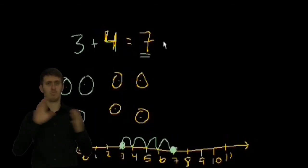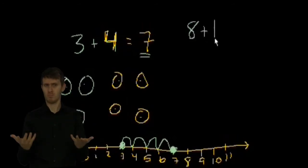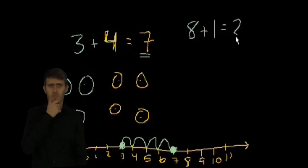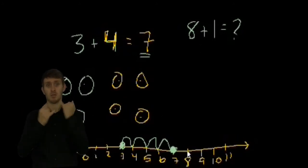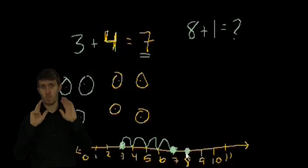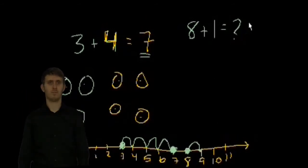We could do a couple of different ones. We could say, what if I asked you what 8 plus 1 is? Well, you might already know it. Plus 1 is just the next number. But if we look at the number line, you start at 8, and you add 1. 8 plus 1 is equal to 9.